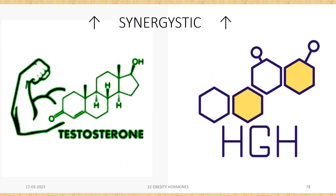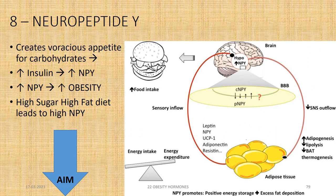Testosterone and human growth hormone are synergistic hormones with similar functions. The eighth important hormone related to obesity is neuropeptide Y (NPY), which creates voracious appetite and craving for carbohydrate-rich food, leading to increased insulin, which in turn increases NPY — a vicious cycle. High-sugar, high-fat diet leads to high NPY, and our aim must be to reduce NPY as much as possible.